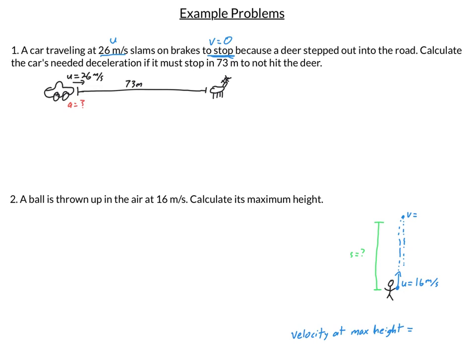Calculate the car's needed deceleration, that means I'm solving for a. If it must stop in 73 meters, there's a displacement so I draw a label picture like I did here and I make a variable bank. Then I rewrite my equation over here. I chose the velocity kinematic because I have initial velocity, final velocity, acceleration, displacement. That lines up perfectly with my velocity kinematic here.